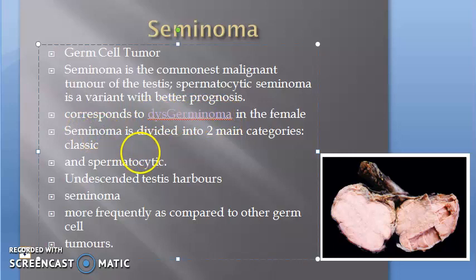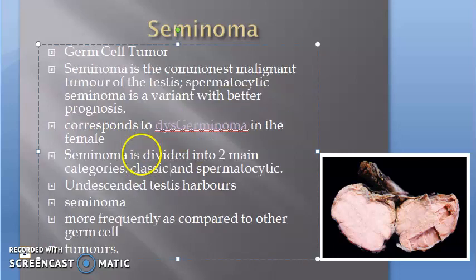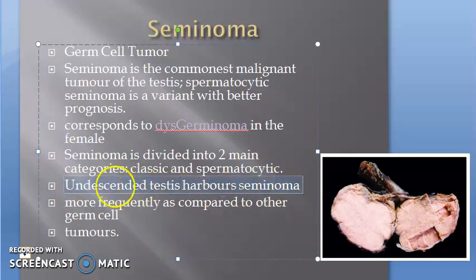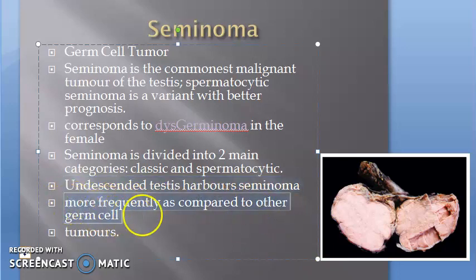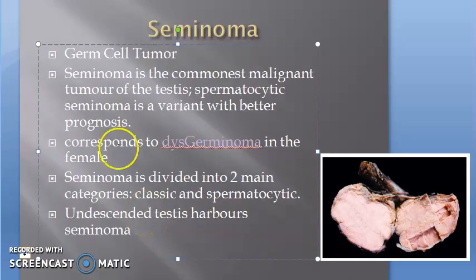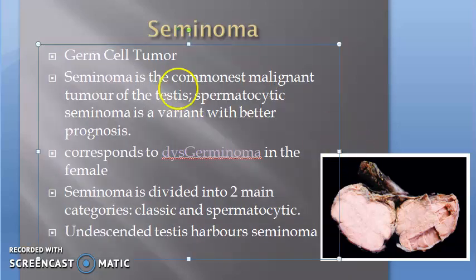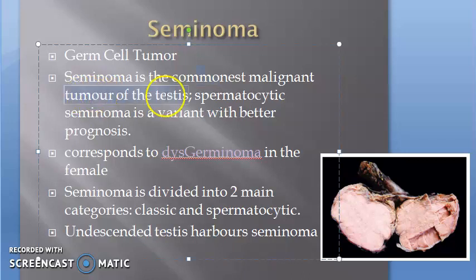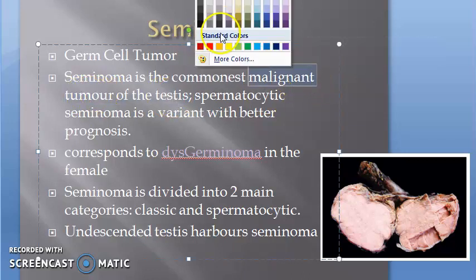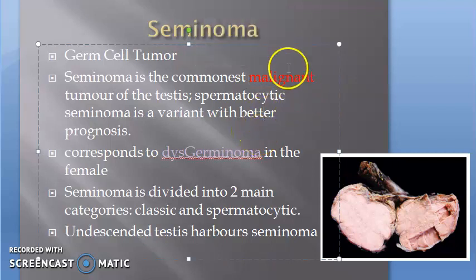Seminomas can be two categories: classic and spermatocytic. Undescended testis harbors seminoma, probably because the testis has not descended and is inside the body, so it tends to be detected at a later stage. It's important to remember this is a malignant condition — the commonest malignant tumor of the testis.